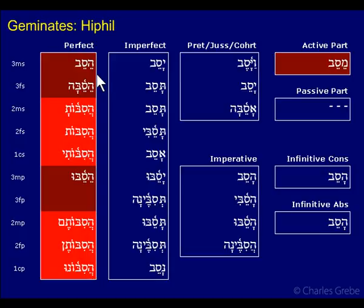These are the forms with tsere. It may look a little like a first-vav verb. Remember you have that e-type with two tseres here, but you just have to keep that straight. Look up the verb itself if you're not sure. The he is a bit of a giveaway that you'll probably have a Hiphil.